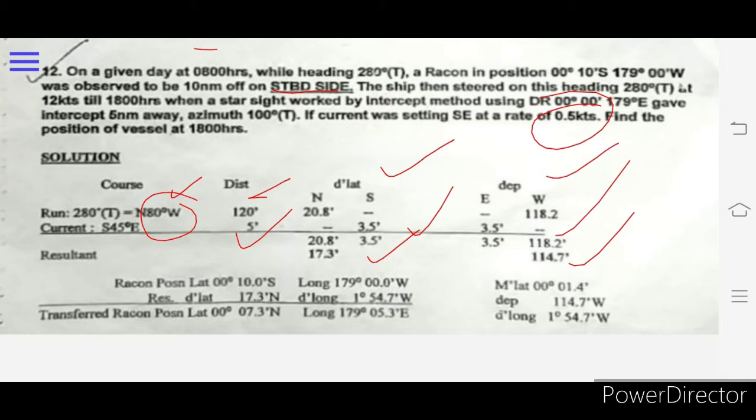Where will I be at 1800 with respect to my reckoning if I am doing the same course with the same speed for such a time? My reckoning position was latitude 00°10.0'S and longitude 179°00'E. I applied my latitude.